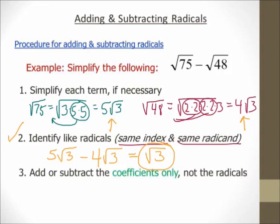If you want to check it, type square root of 75 minus square root of 48 in your calculator and get some decimal. Then type square root of 3 in your calculator. That decimal should match. If it does, then you know you did it right.